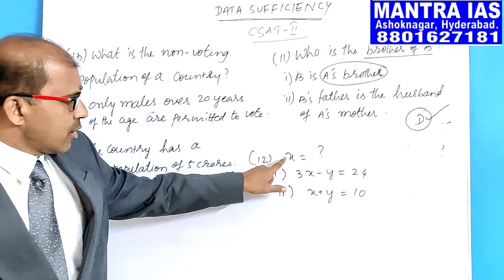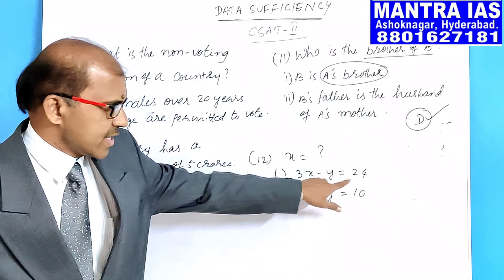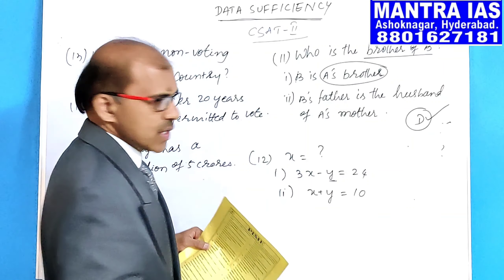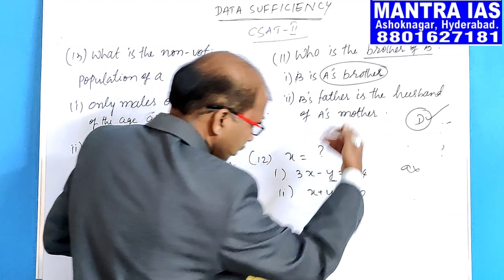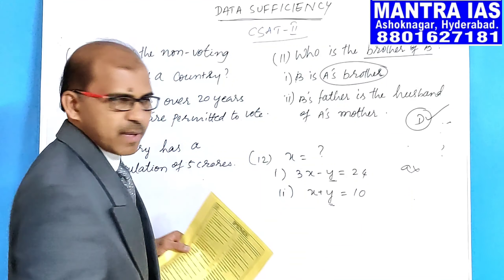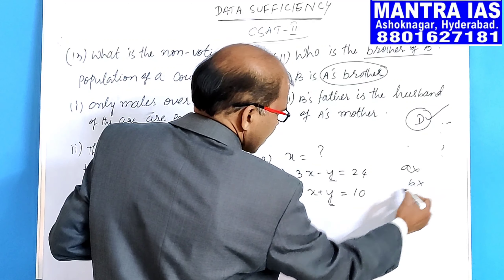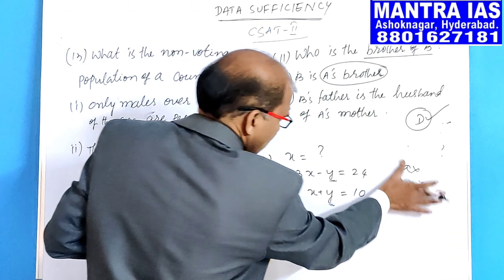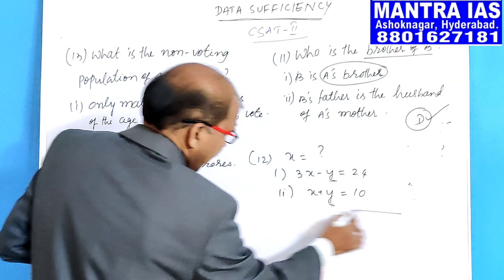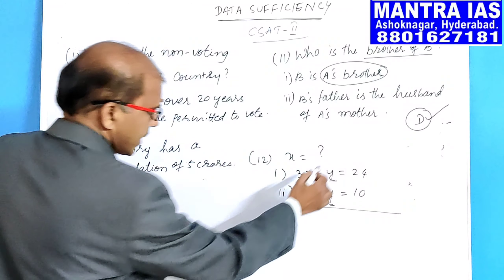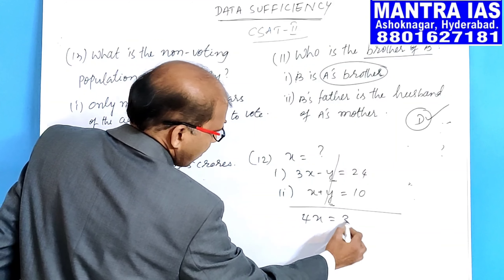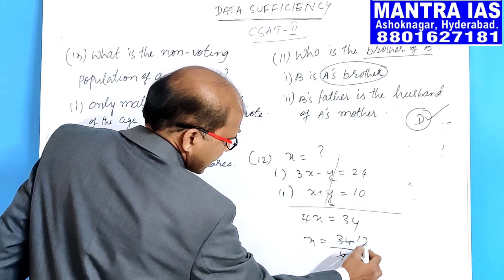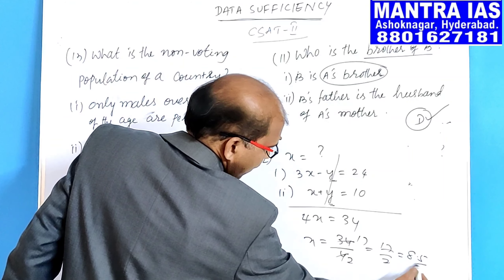Twelfth exercise question: what is the value of X? First statement: X plus Y equals some value. Second statement: 3X minus Y = 24. Neither statement alone gives X because of the extra variable Y — not A, not B. Combining both statements, adding them cancels Y: 4X = 34, so X = 17/2. We got the answer by combining both statements, so the option is C.